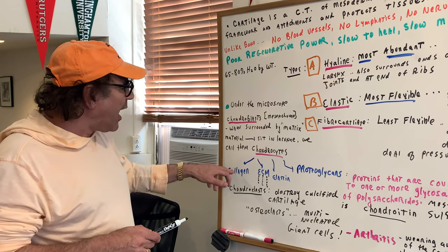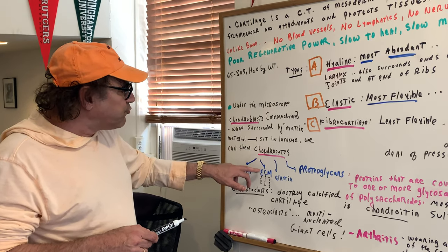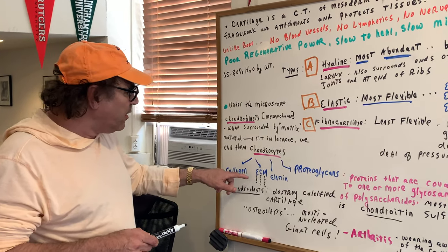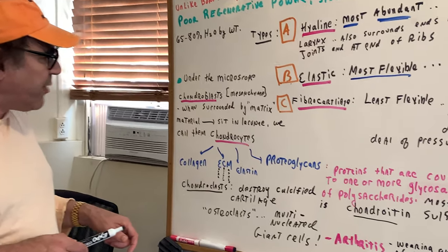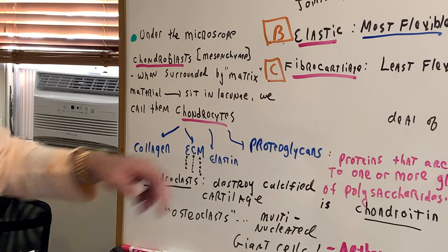Chondrocytes give rise to collagen, give rise to elastin, these are the fibers you would see, the extracellular matrix, and proteoglycans.